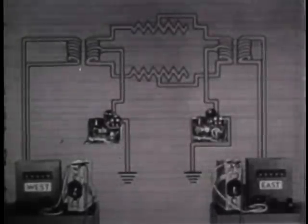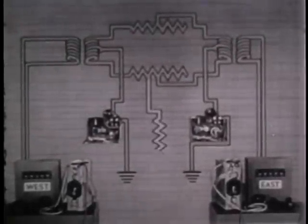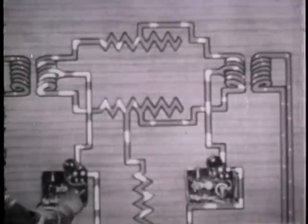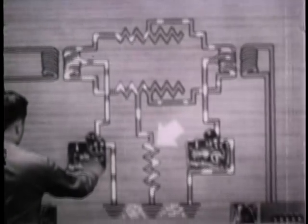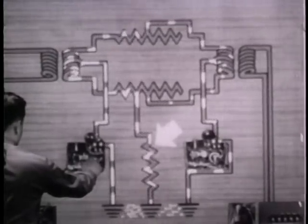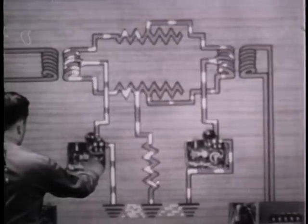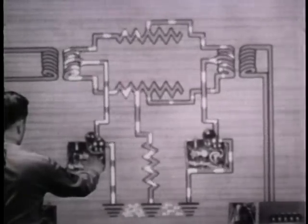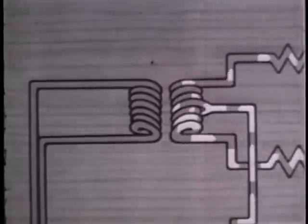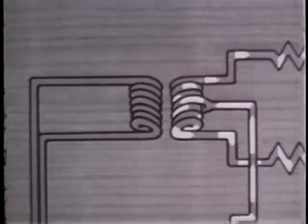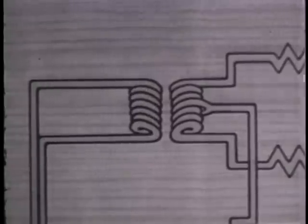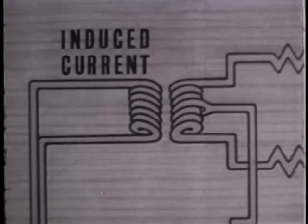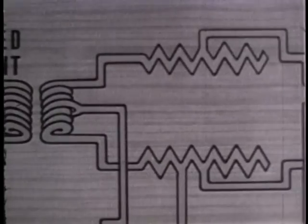Another condition which causes interference is an accidental ground on one of the line wires. Part of the telegraph current is diverted by the accidental ground. However, enough generally gets through to operate the other telegraph set. Currents are unbalanced in both repeating coils and current is induced in both the other windings. Notice that the induced current is greater at the sending end than at the receiving end.